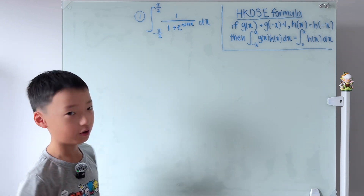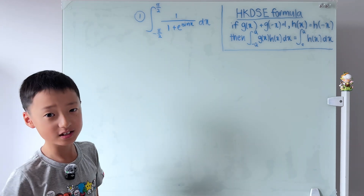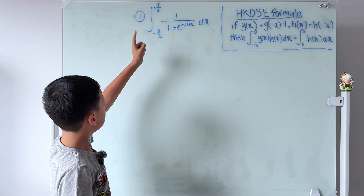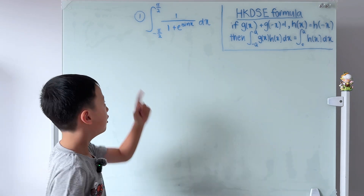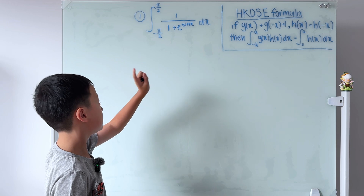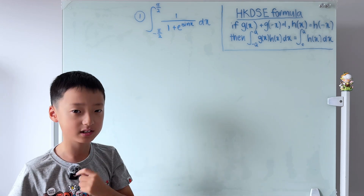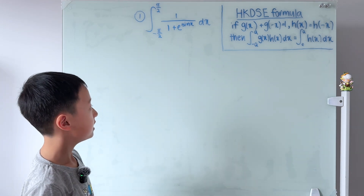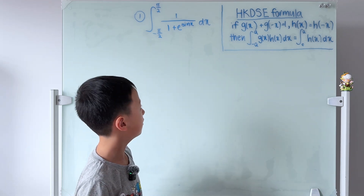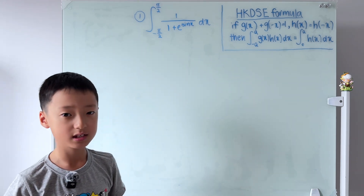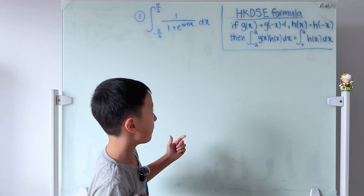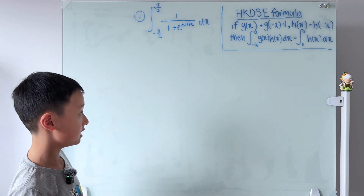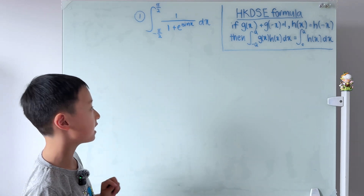As you see on the board, Question 1 is the integral from negative π/2 to π/2 of 1 over (1 + e^(sin x)) dx. The formula requires that g(x) + g(−x) = 1 and h(x) = h(−x).